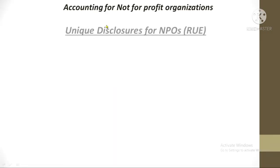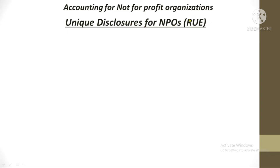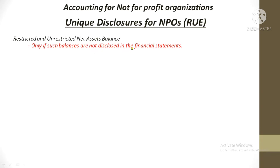The unique disclosures of the NPO have a mnemonic: RUE. R is for restricted and unrestricted net assets balance. The NPO should present this in its disclosures, but only if such balances were not already disclosed in the financial statements — like if they are not found on the statement of financial position or statement of activities.